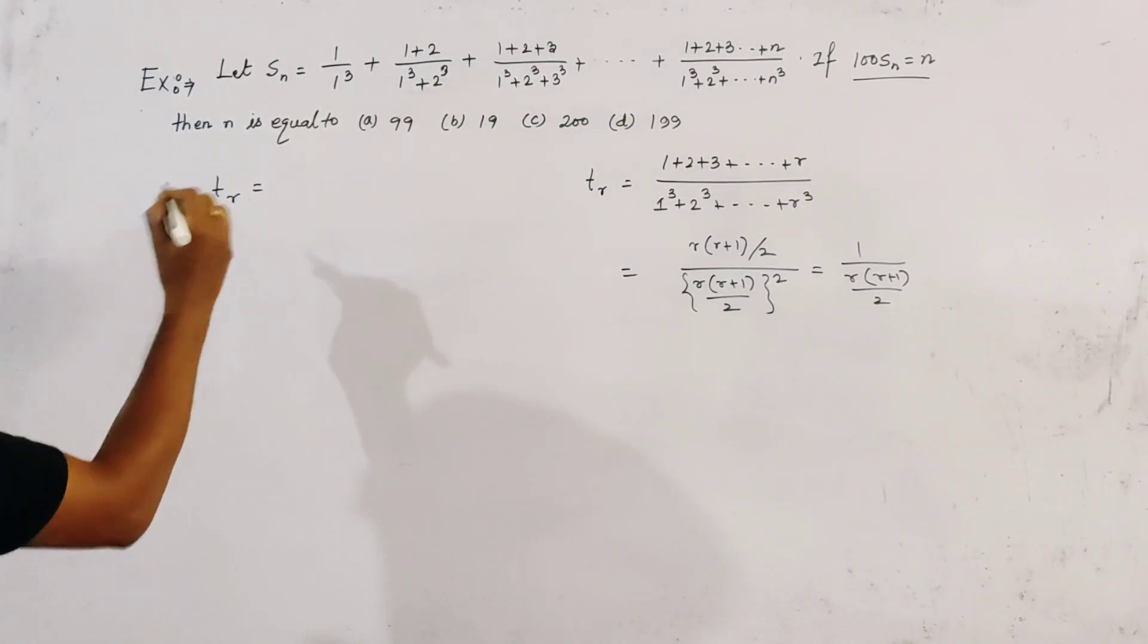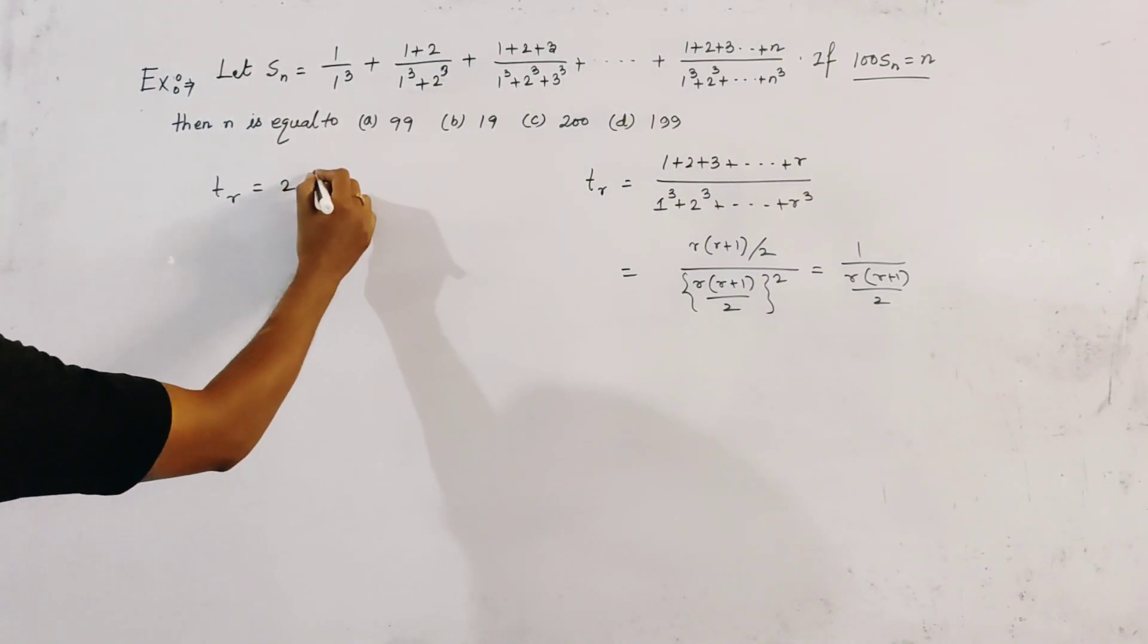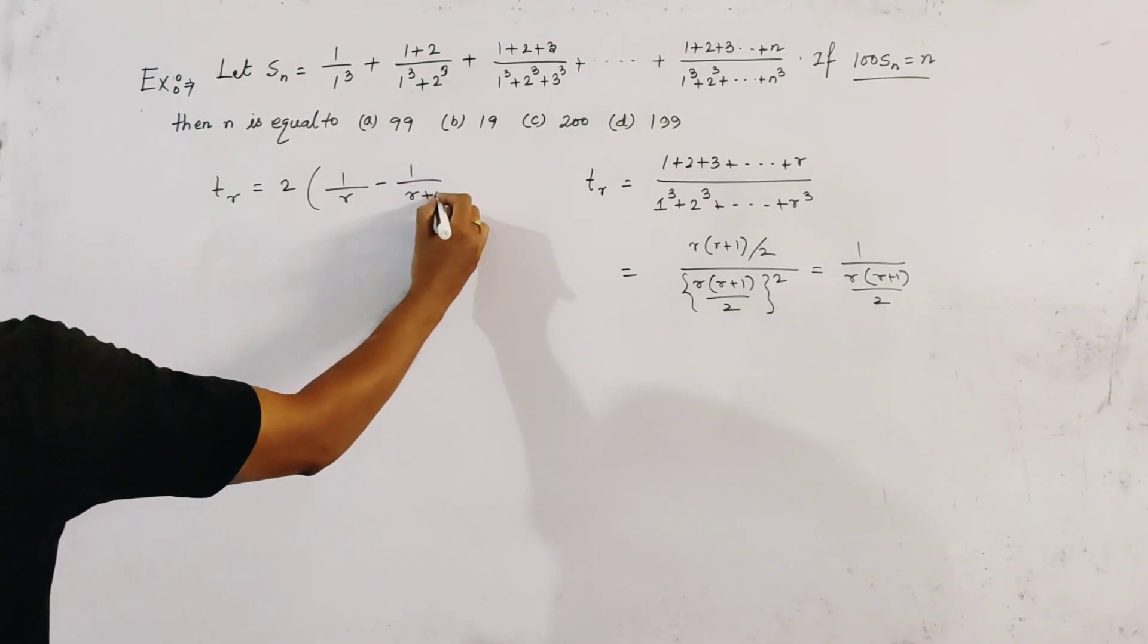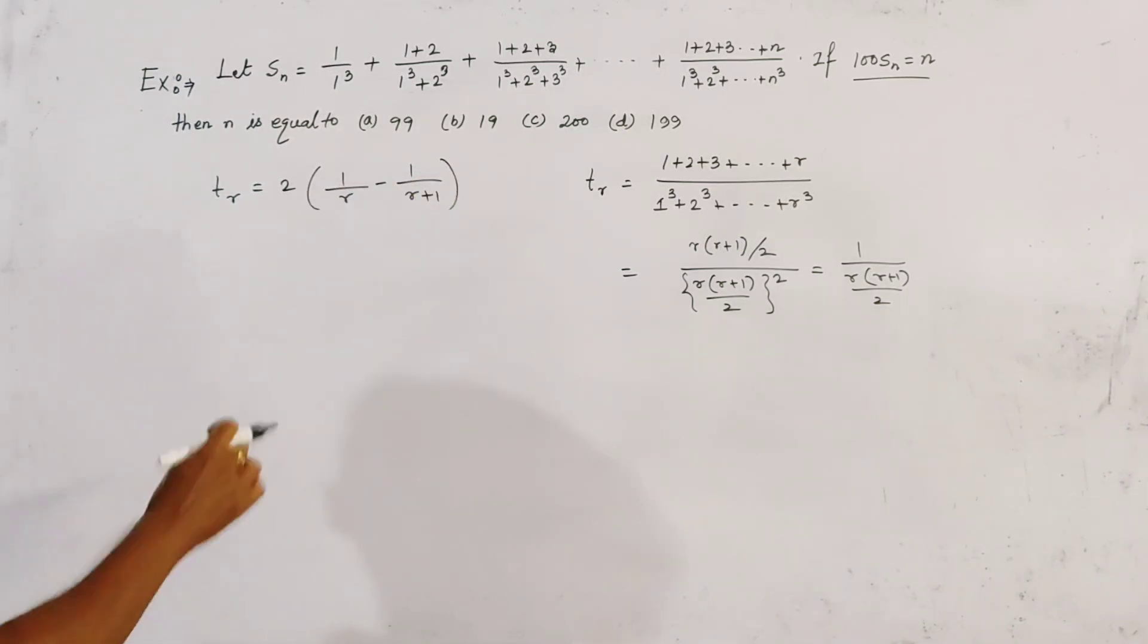We can write tr as 2 times (1/r minus 1/(r+1)). We write this term in the form of this partial fraction.